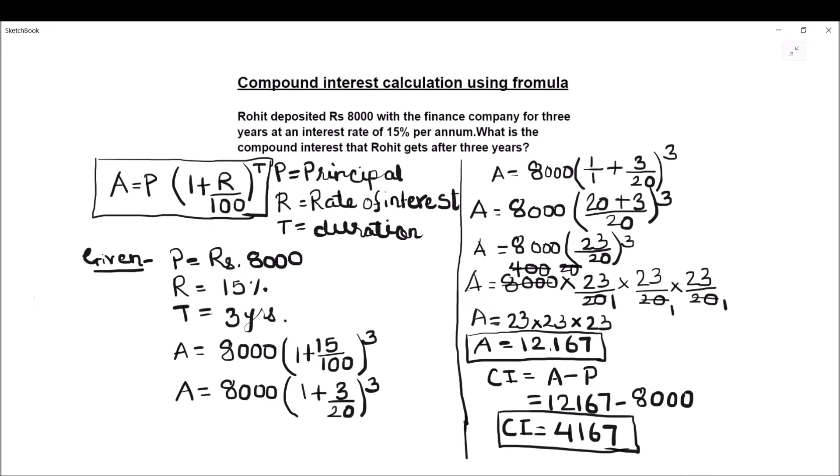So this is how we find compound interest. The interest is 4167 and the principal amount is 8000. When we add interest to the principal that gives us the amount, which is 12,167. Apart from the principal of 8000, Rohit will pay an interest of 4167 to the finance company. Let us solve one more example to get a better understanding.